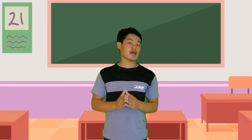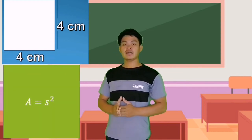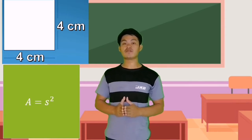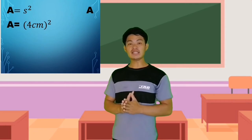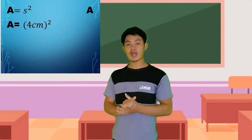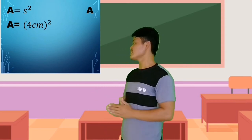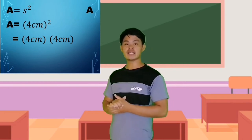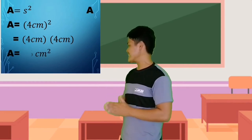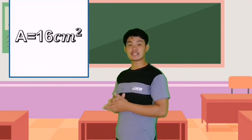Now let us find the area of shape A — the square. The formula for a square is area equals s squared, or side raised to the power of 2. We substitute 4 cm as the value of the side. So, area equals 4 cm times 4 cm, which is equal to 16 cm squared.